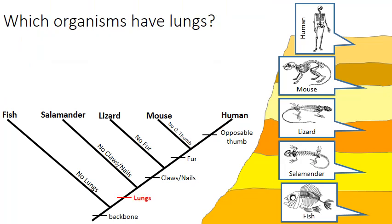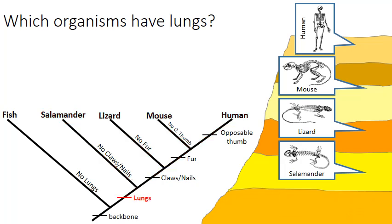Now I can do a little analysis. According to my cladogram, which of these organisms have lungs? You can see the characteristic of lungs is flashing. From the label of lungs, from that point upward, everything possesses lungs — that would be the salamander, the lizard, the mouse, and the human. Everything below that point, which is only the fish in this example, does not have lungs.